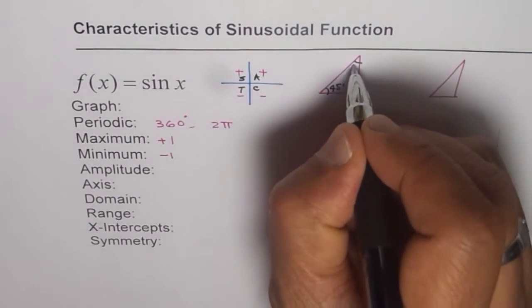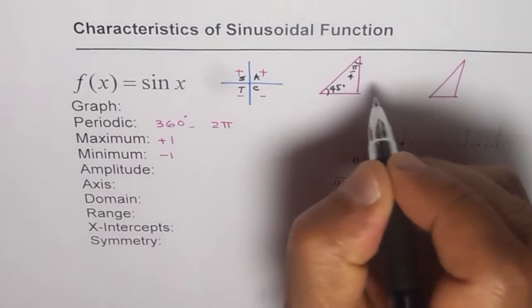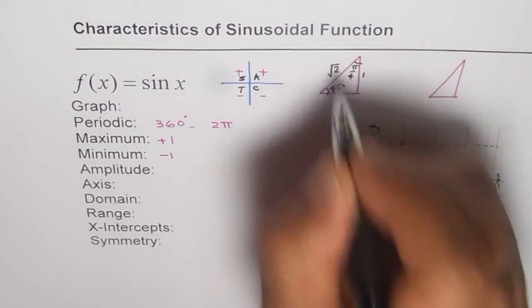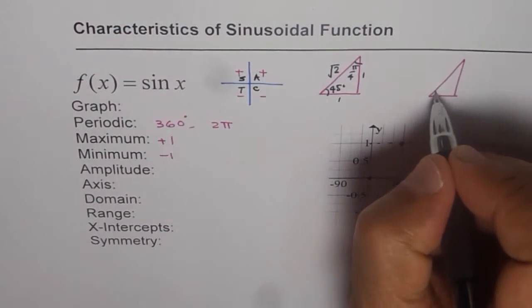So if it is 45 degrees, or in radians we can write π by 4, if these sides are 1 and 1, the hypotenuse is square root 2.